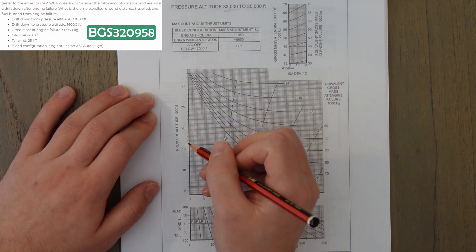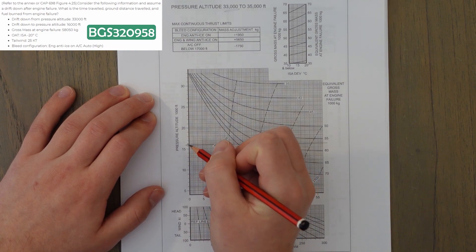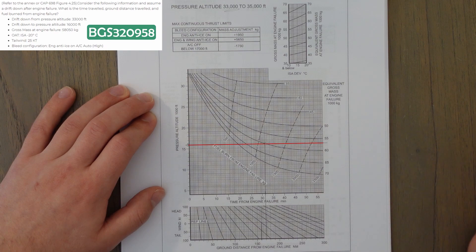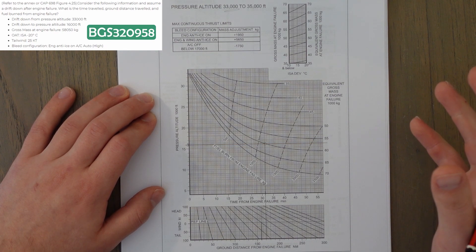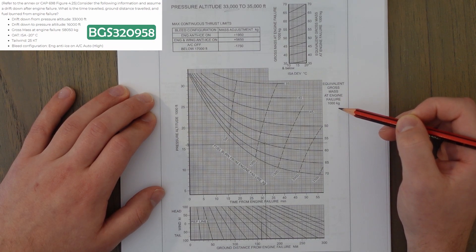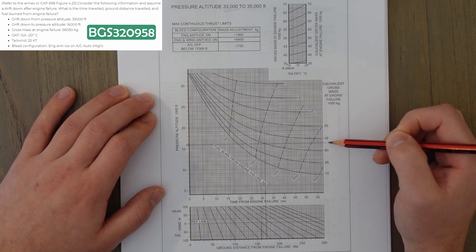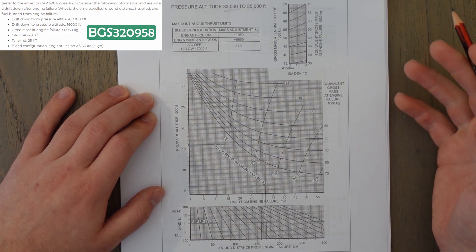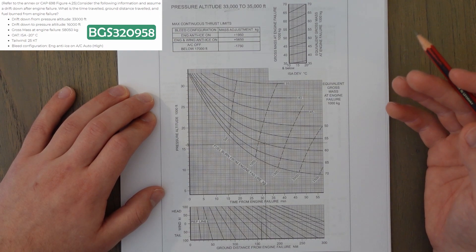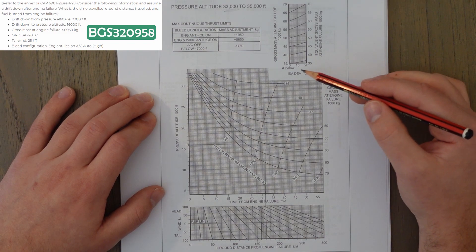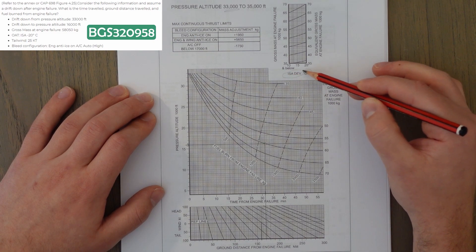So, we're drifting down to 16,000 feet, which is here, and then we're going to go straight across, 16,000 feet. Cool, that's one bit of information. Next, we need to work out our mass equivalent at the engine failure, which is this figure here, which is what these numbers down the side equate to. So, our starting mass is 58,050 kilograms, and we need to correct for the gross mass according to the ISA deviation here.